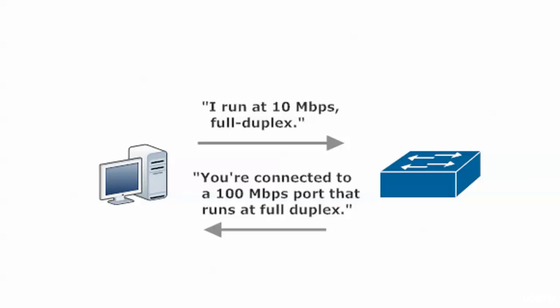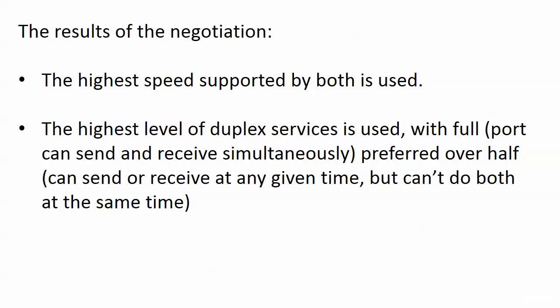It could go a little something like this. The switch port says: 'Hey, you are connected to a 100 meg port, runs at full duplex, it's Fast Ethernet — fantastic service, you're gonna love it.' And the host says: 'Wait a minute, I'm running at full duplex too, but I only run at 10 meg.' So they have to come to an agreement on speed even though they agree on duplex. The results of the negotiation won't surprise you — the highest speed supported by both is going to be used, which prevents one device from being overwhelmed by data.